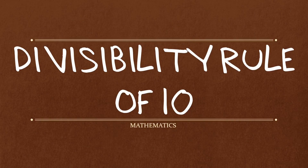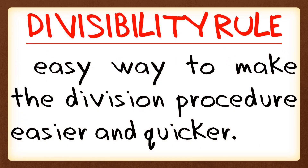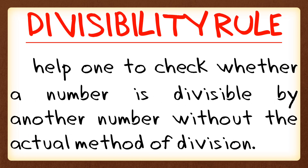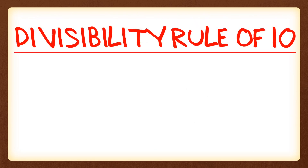In this video we're going to learn about the divisibility rule of 10. A divisibility rule is an easy way to make the division procedure easier and quicker. It helps one to check whether a number is divisible by another number without the actual method of division.